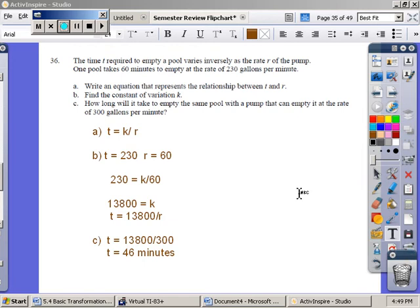Problem number 36. The time T required to empty a pool varies inversely as the rate R of the pump. One pool takes 60 minutes to empty at the rate of 230 gallons per minute.